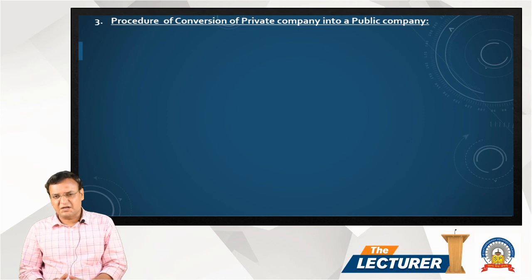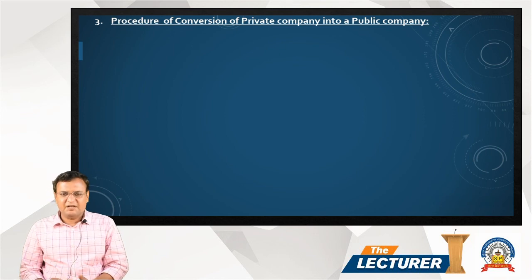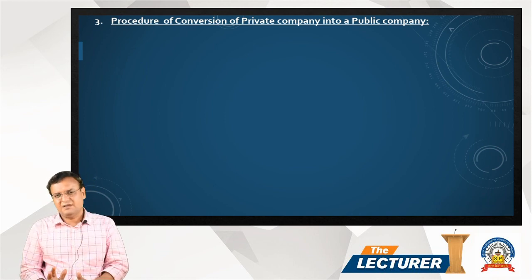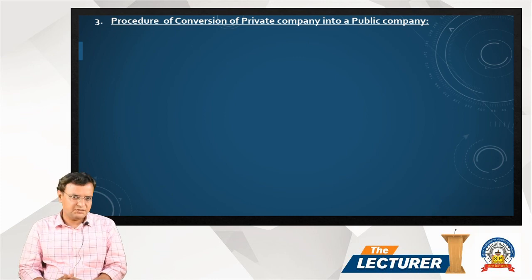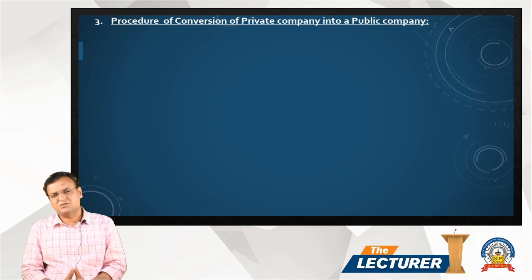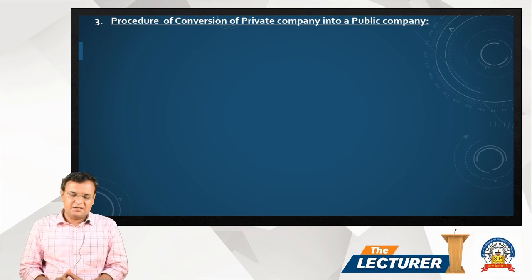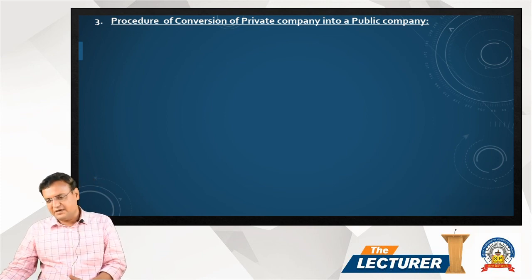No approval from the central government is required. In a company, any decision can be made with the consent of members. Material decisions require a special resolution to be passed. So the consent of the members is received by the company through passing a special resolution. Let us discuss the steps involved in the conversion of a private limited company into a public limited company.